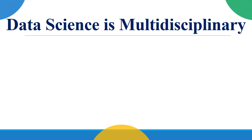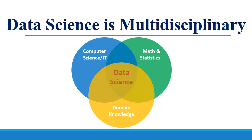Data science is the intersection of three key components: computational knowledge, mathematical knowledge, and domain knowledge. Computational knowledge is important as a data scientist has to write computer programs and algorithms. Mathematical and statistical knowledge is required in the data science process, which involves statistical analysis and machine learning modeling. As the data scientist has to work with data sets of diverse domains, it's important to have some basic knowledge of that domain as well.